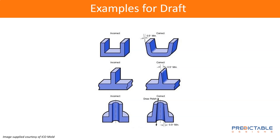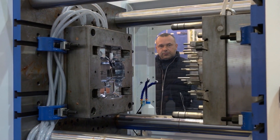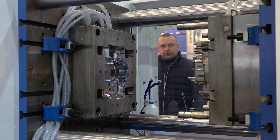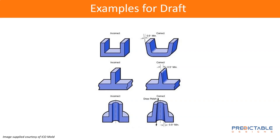There are things called ejector pins — little pins in the mold that, when the mold opens up, make the part pop out. Those ejector pins will leave what are called ejector pin marks on the part. You typically want to design the mold so that these ejector pin marks are on a part of the part that isn't cosmetically important, maybe the underside or something like that.